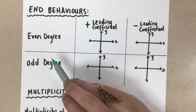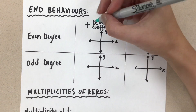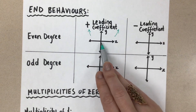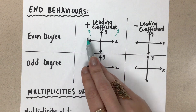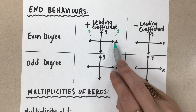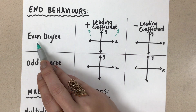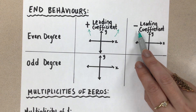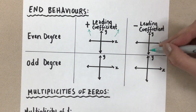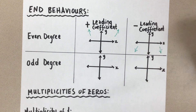If a function has an even degree and a positive leading coefficient, both end behaviors approach positive infinity. So as x approaches negative infinity, y approaches positive infinity, and as x approaches positive infinity, y approaches positive infinity. If we have an even degree polynomial with a negative leading coefficient, the end behaviors flip over the x-axis and both go to negative infinity.